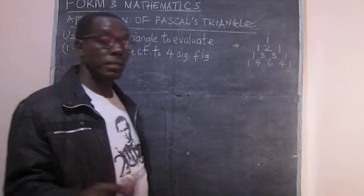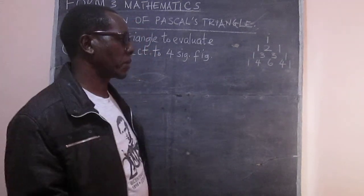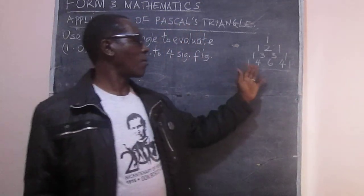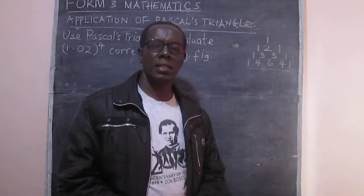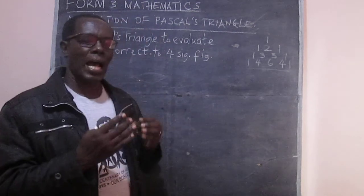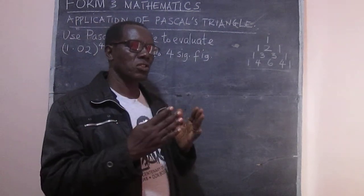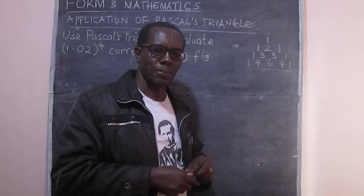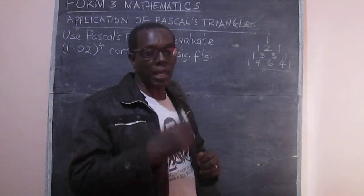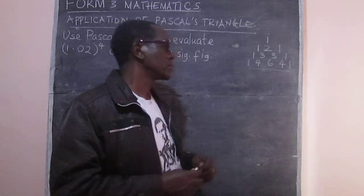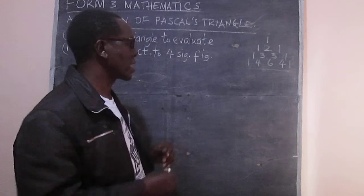So the line of Pascal's triangle that we need is this one, where the coefficients are 1, 4, 6, 4, and 1. Now in our mind, we must have the expansion of (a + b) raised to the power of 4. That's something we have looked at in the previous video, and so that's what we need right away here.